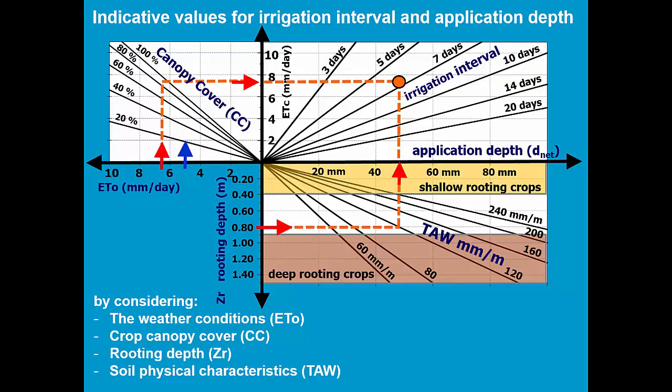For an ETo of 5 mm per day, the corresponding irrigation interval will be something as 8-9 days. The 48 mm is the maximum application depth for that soil type and rooting depth.